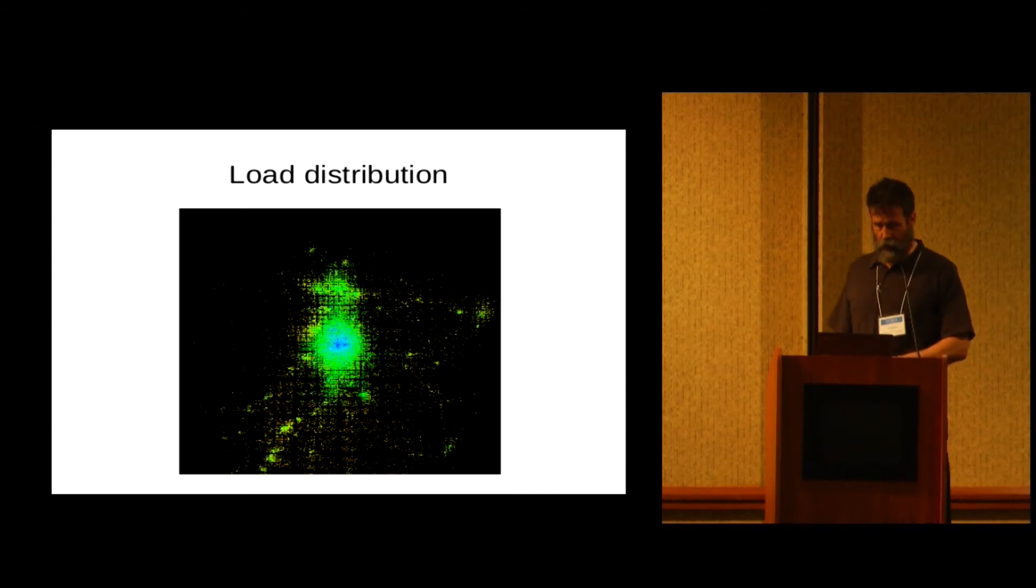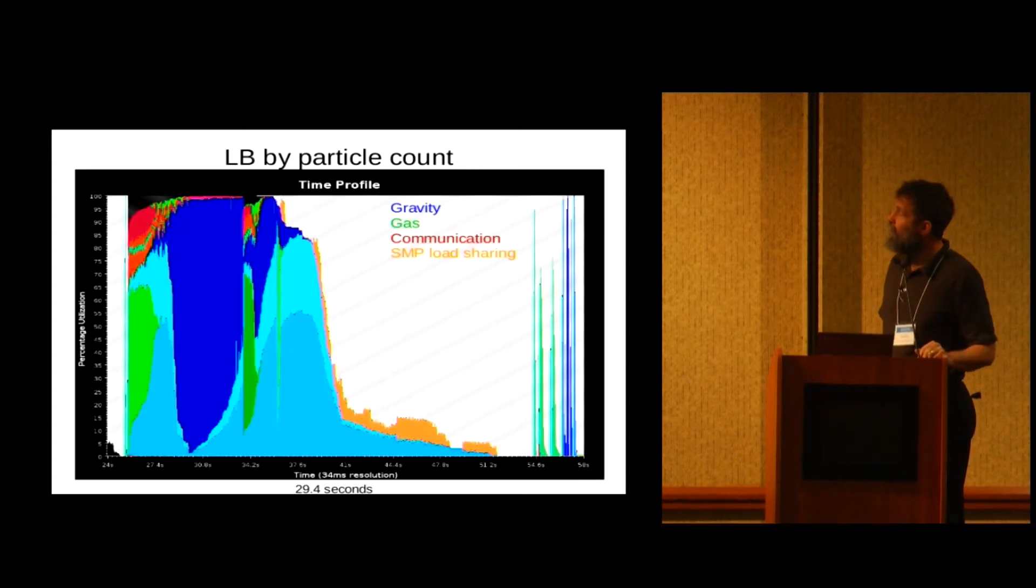So if you just try to load balance this by evenly distributing the particles across Blue Waters, you get a load diagram that looks like this. So this is utilization, in this case of 8,000 processors as a function of time over 30 seconds. See that there's a lot of work to be done, but then there's this long tail. White means nothing's going on, that's bad.